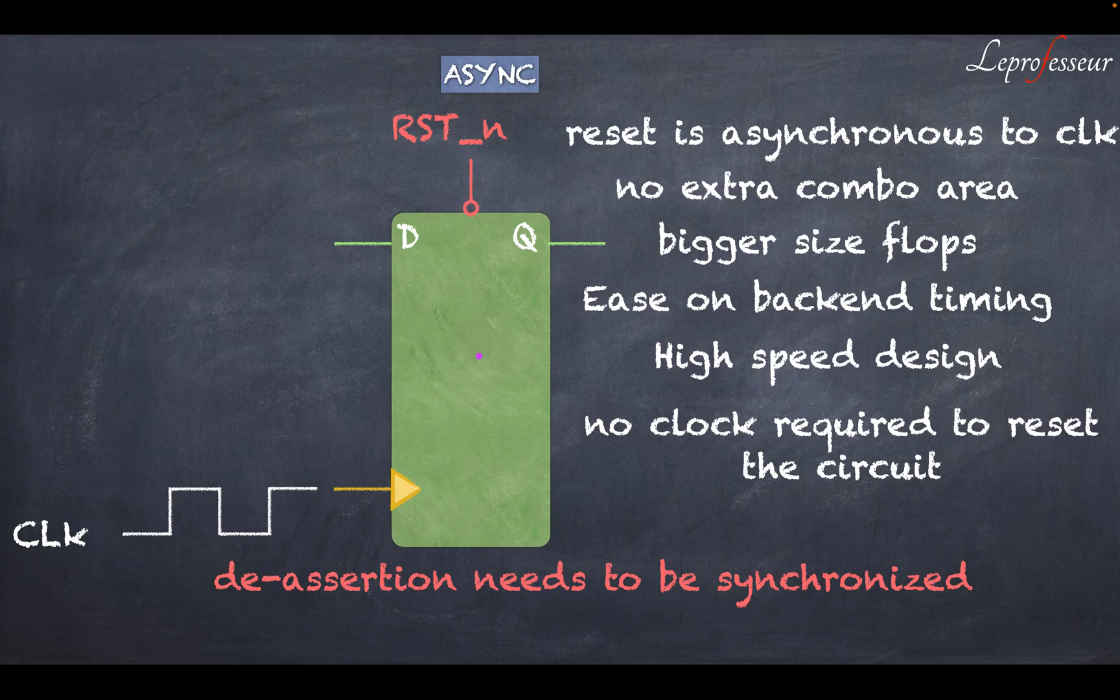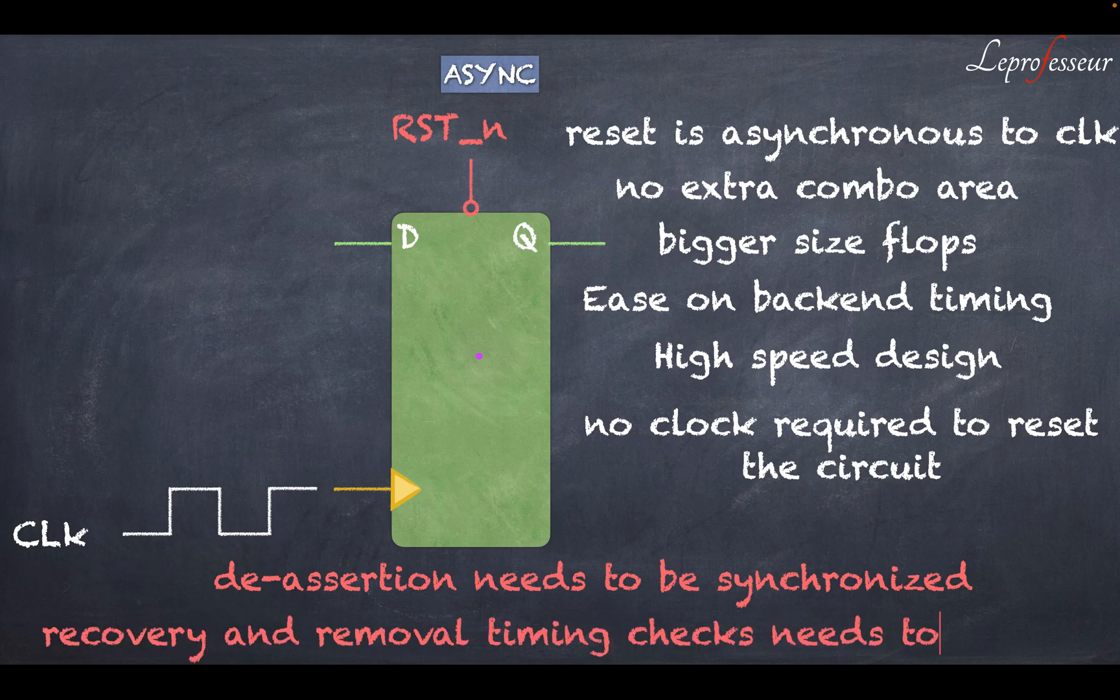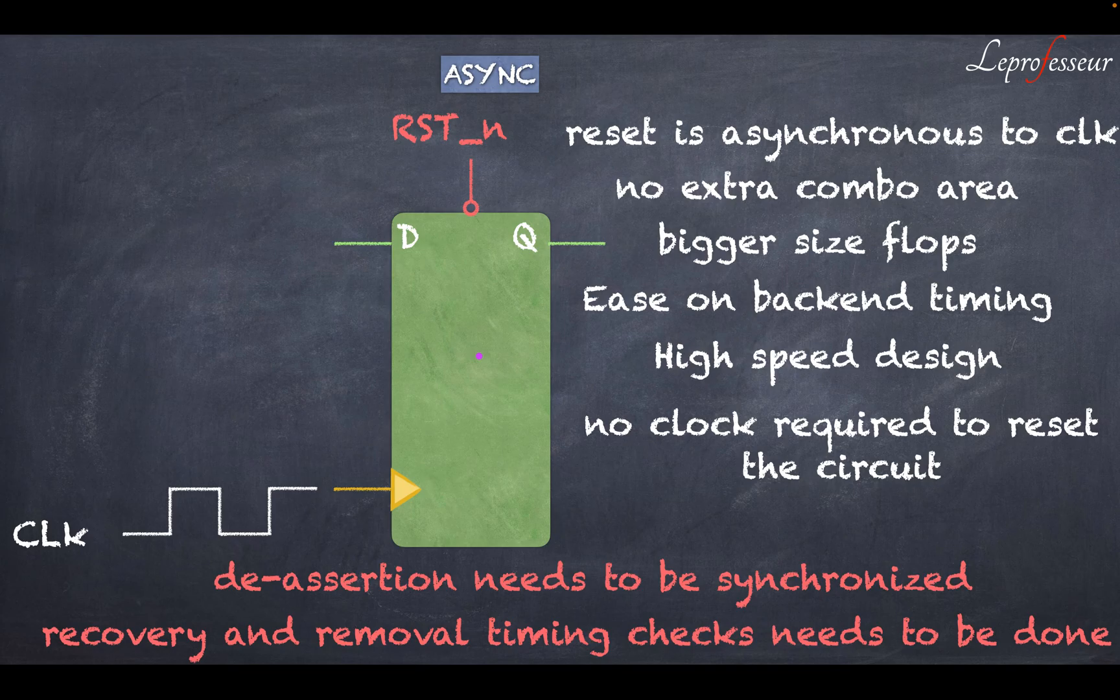The only thing you have to worry about is that the de-assertion of the reset must have to be synchronized with respect to the clock. So that's very important. De-assertion must have to be synchronized with respect to clock. And the recovery and removal checks which are typically done in a timing tool like PrimeTime, they need to be done. Recovery and removal checks need to be clean with this kind of a design. And that's not a problem; modern day tools are good enough to give you whether they are able to meet recovery and removal timing or not.